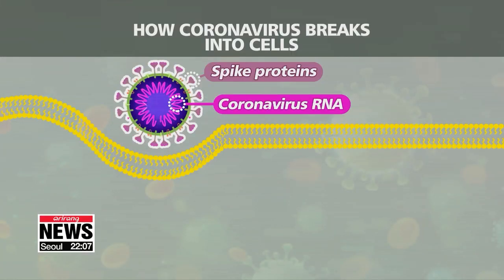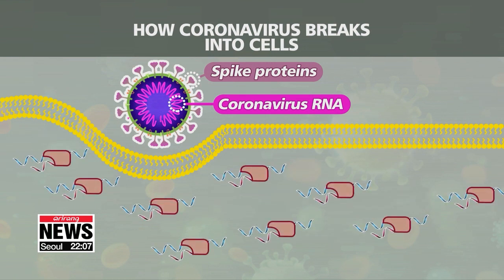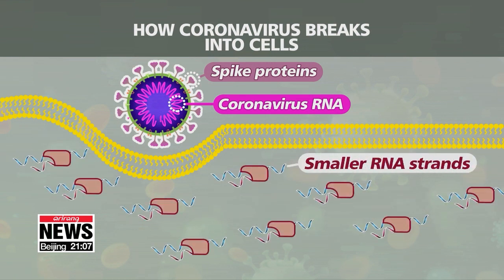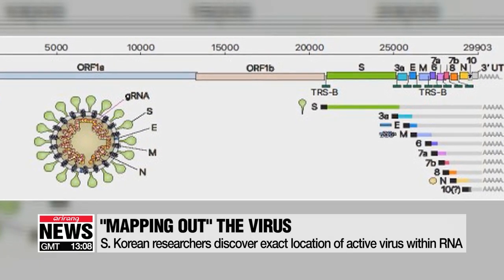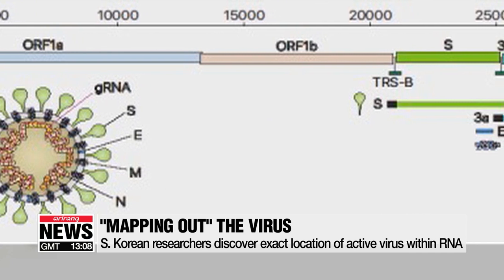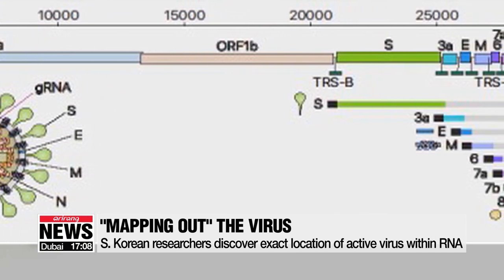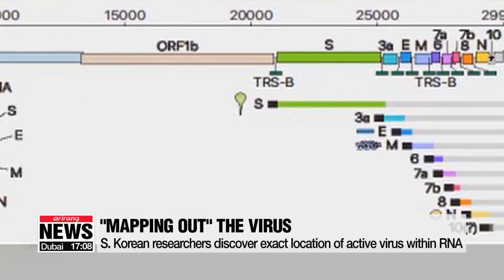When the novel coronavirus breaks into a cell in your body, its RNA strand gets divided into millions of smaller strands of RNA. Other scientists had already worked out the RNA's genetic sequence, but they didn't know exactly where the active parts of the virus were located within the RNA chain. The location of those active parts has finally been mapped by the Korean research team, which combined two innovative techniques to completely dissect the RNA.